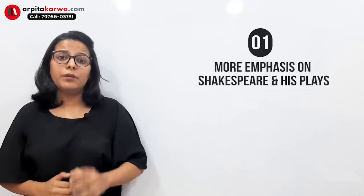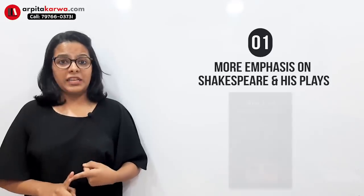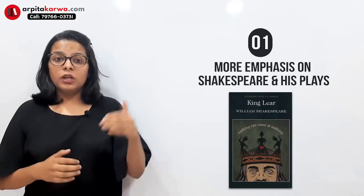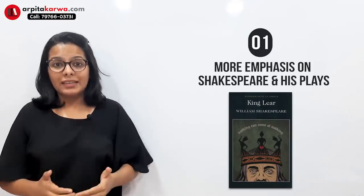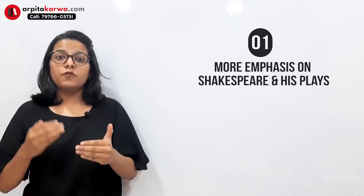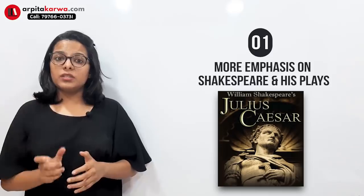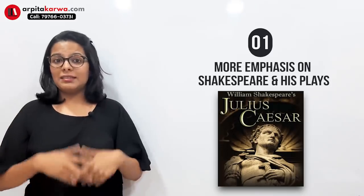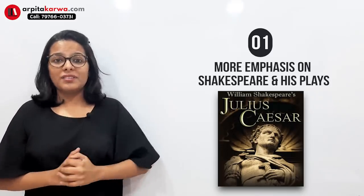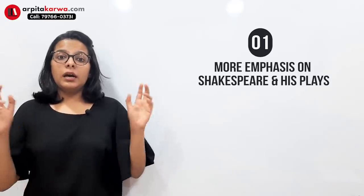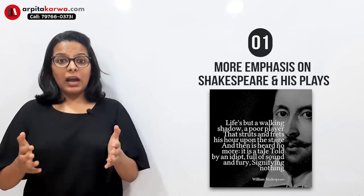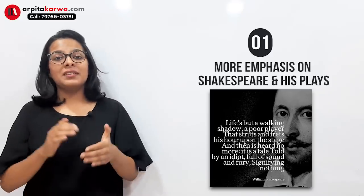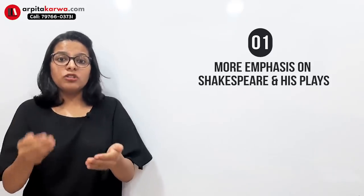This time they asked a direct question from King Lear — they gave lines and asked who spoke them, a 'who said what to whom' kind of question. The same kind of question was asked from Julius Caesar — a line was given and they asked whether it was Brutus or Caesar who said those lines, and to whom. Another interesting question from Macbeth featured the famous line 'Life is but a walking shadow,' asking what the line actually means, with four options given.